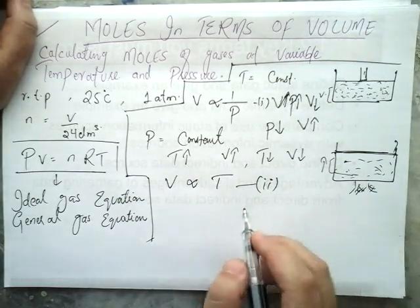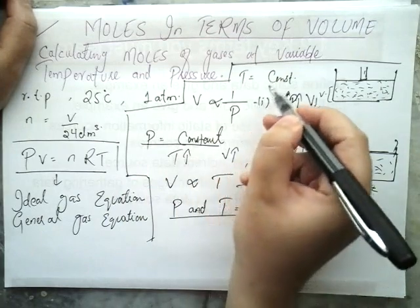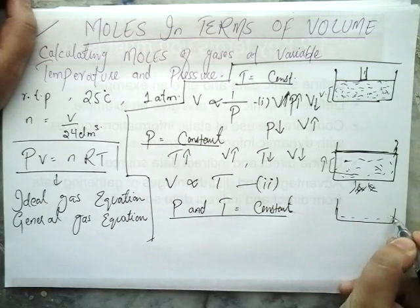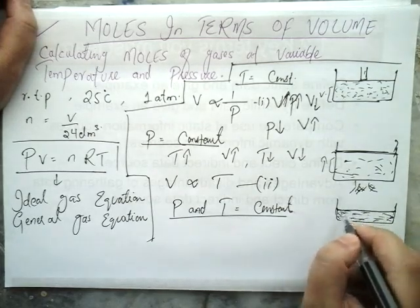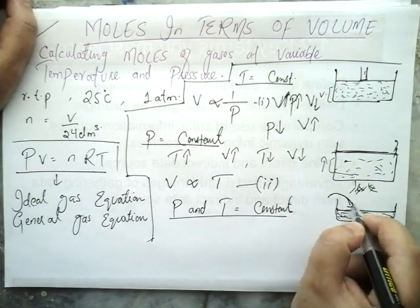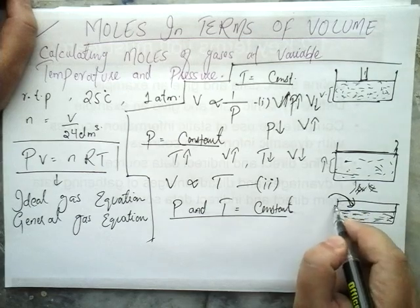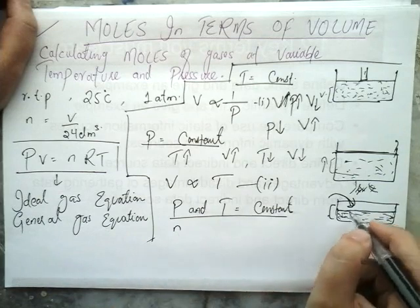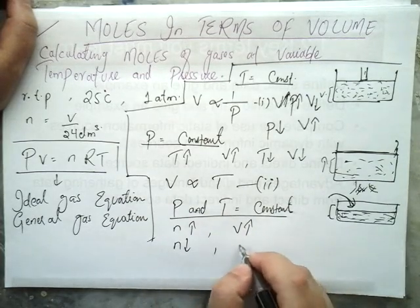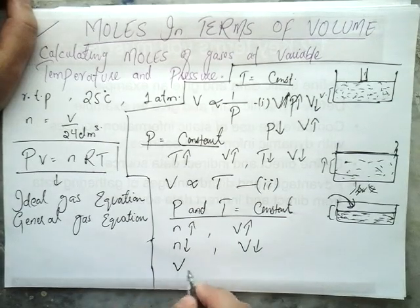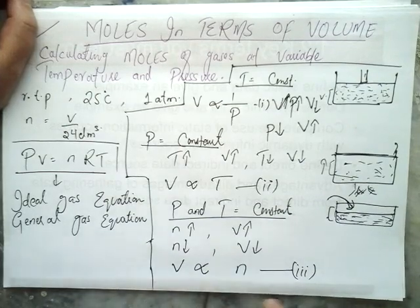In the same way, if we keep both volume and temperature constant — for example, in a container at the same pressure — if we add more moles of gas, the volume will rise. If we increase the number of moles the volume also rises, and if we decrease the number of moles the volume also decreases. So volume also depends directly on the number of moles.